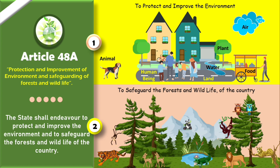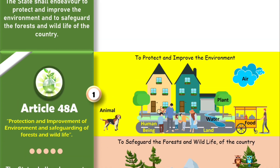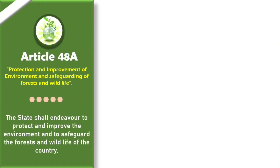So basically, Article 48A of the Indian Constitution guides the states and the authorities of the state to protect and improve the environment and to safeguard the forests and wildlife of the country. As mentioned, Article 48A was added later by the 42nd Amendment Act of 1976, so we should know the reason why this article was added to the Indian Constitution.